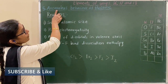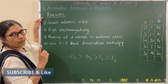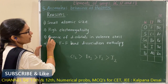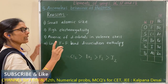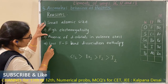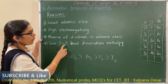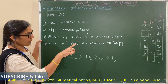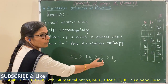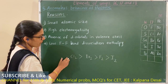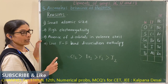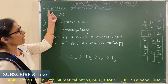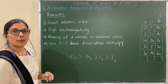Now let us see the anomalous behavior of fluorine and its reasons. The same three reasons apply: small atomic size, high electronegativity, and absence of d orbital in the valence shell. In addition, fluorine has less bond dissociation enthalpy than expected. Due to these four reasons, fluorine shows anomalous behavior.